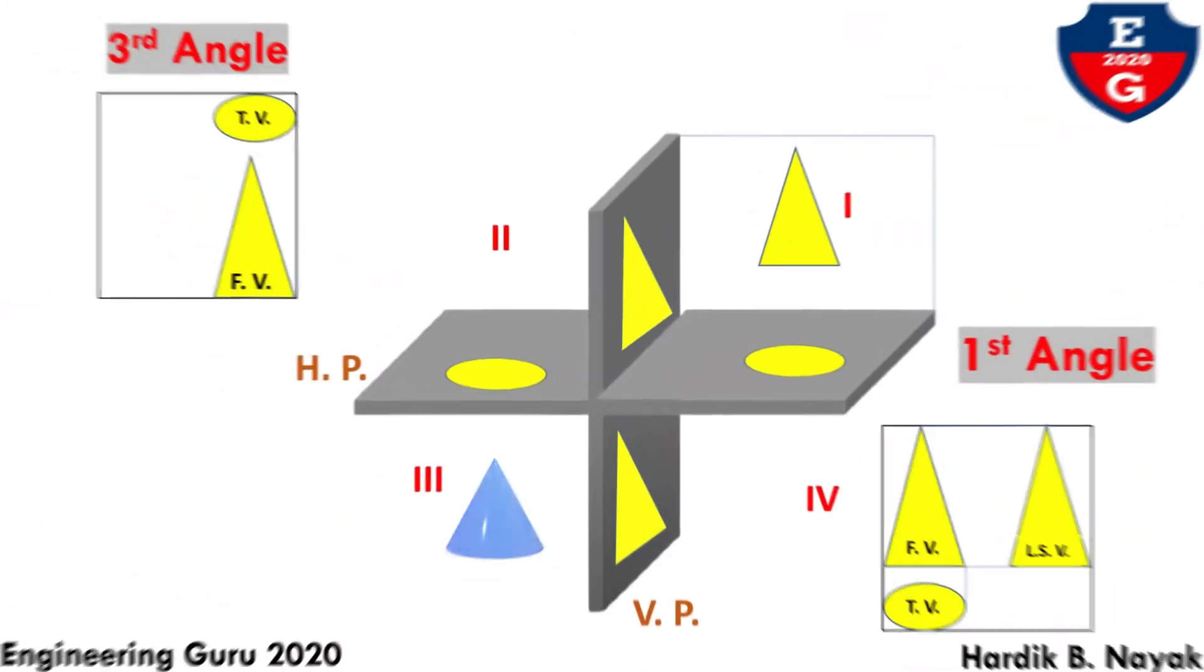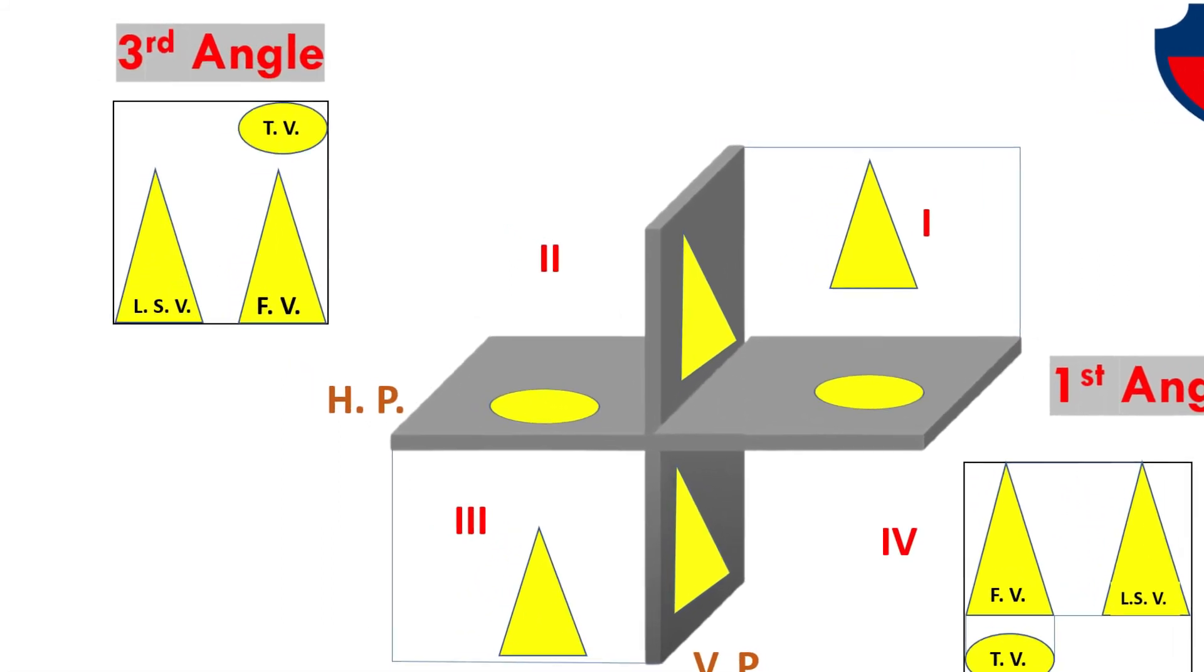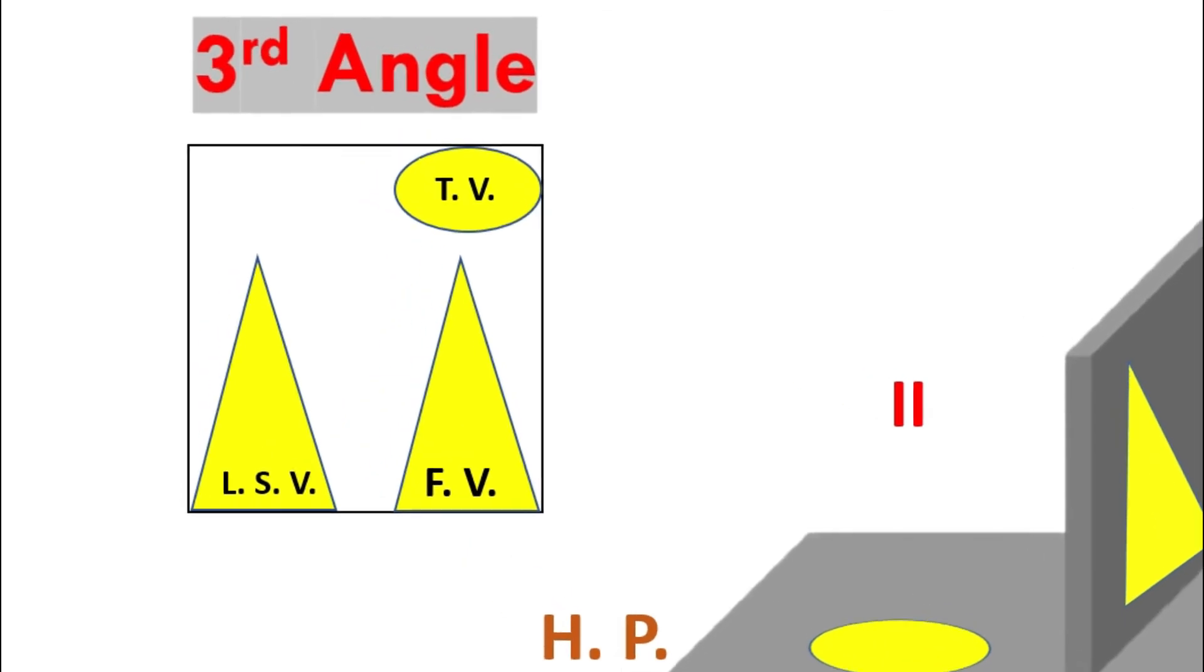When seeing from left side, it will be projected on the left side. That's why in third angle, left hand side view is on the left side of the front view.